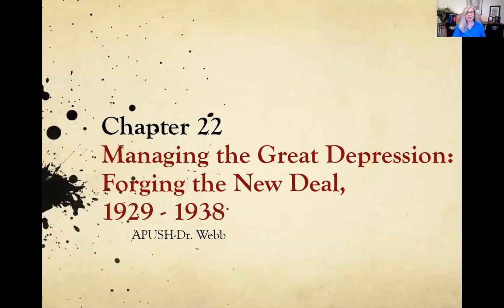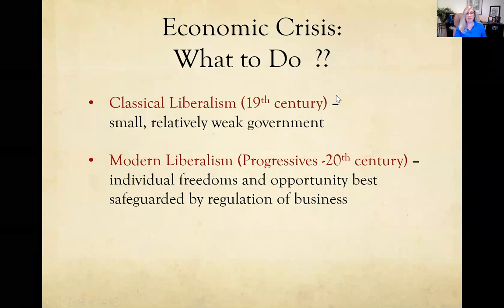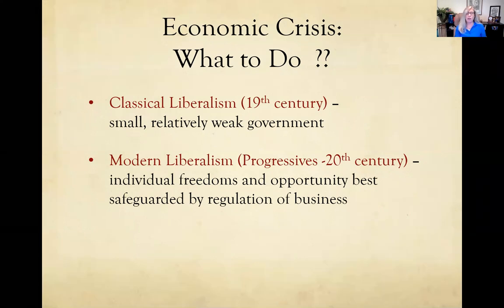Chapter 22 covers this time period — 1929, which would be the stock market crash, up through 1938, which would be the end of the New Deal and then starting to get into aspects related to World War II. As we look at this, we also need to keep in mind a shift in the approach to government involvement — not just in economic regulation, but also in social programs and social freedoms.